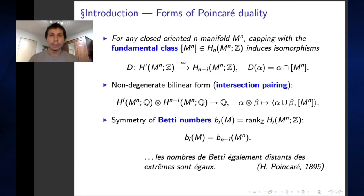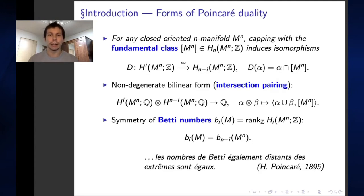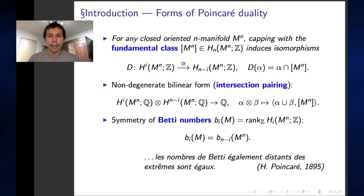Poincaré duality can be stated by saying that Betti numbers of complementary degree are equal. This symmetry has already been observed by Poincaré himself.